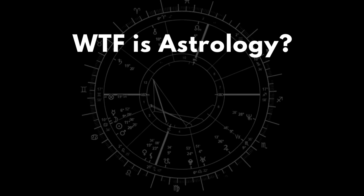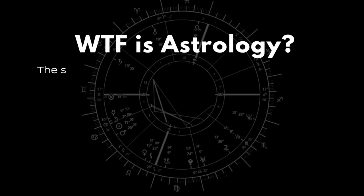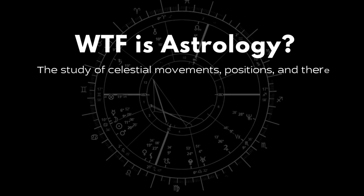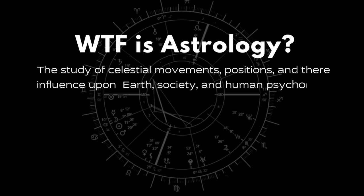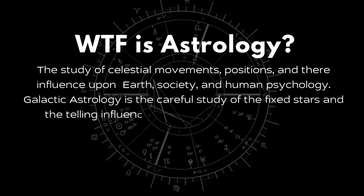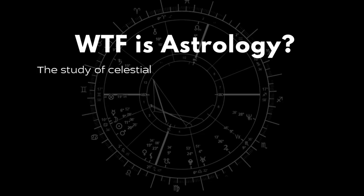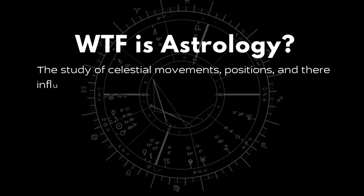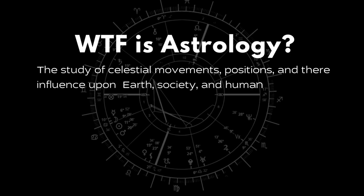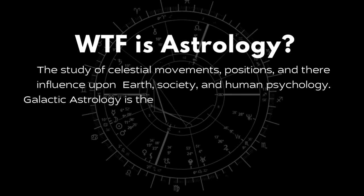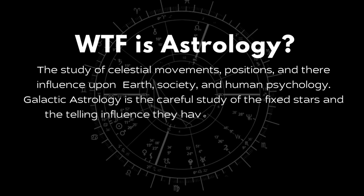I would like to present to you some super cool visuals just to give you a baseline for what astrology is. This maybe is for newbies or anybody maybe overwhelmed by the natal chart and all of the symbology going on here — what the heck is it? And maybe you will find interest in this even if you are a skilled astrologer. So what the heck is astrology anyway? It's the study of celestial movements and positions and their influence on Earth and society and human psychology. Galactic astrology is this careful study of the fixed stars and the telling influence that they have of a being's galactic experience.